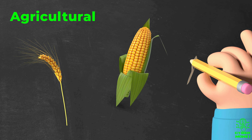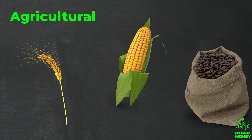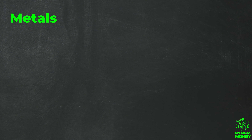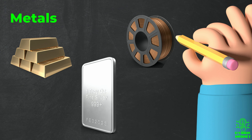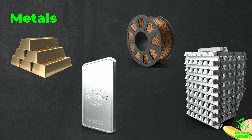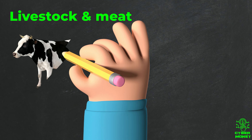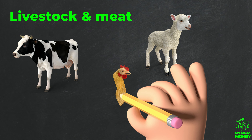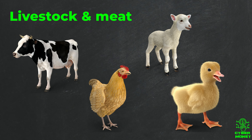Agricultural: these include products that are grown on a farm, such as wheat, corn, soybeans, and coffee. They are used for food, feed, and other products. Metals: these include precious metals such as gold and silver, as well as base metals such as copper, aluminum, and nickel. They are used for industrial, commercial, and building purposes.